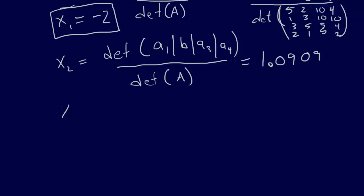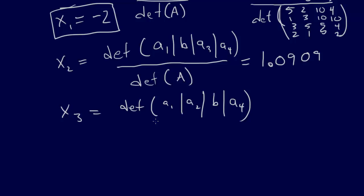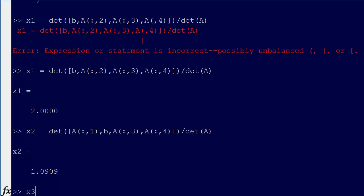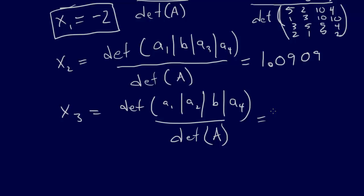Continuing onward, we'll do the rest of them. X3 equals the determinant of [A1, A2, B, A4] over the determinant of A. In MATLAB: X3 equals the determinant of A colon 1, then A colon 2, then B in the third spot, then A colon 4, over the determinant of A. We get 2.4545, so X3 equals 2.4545.